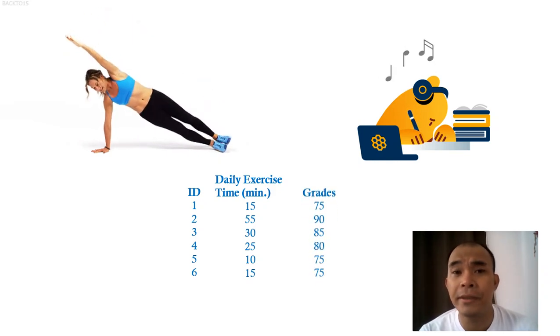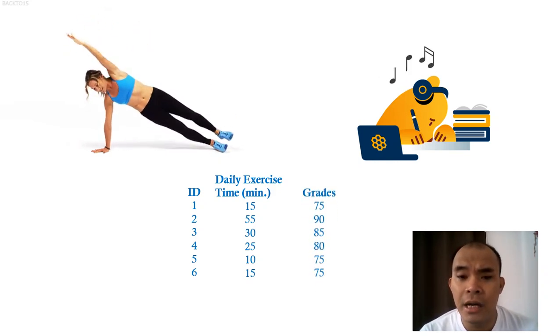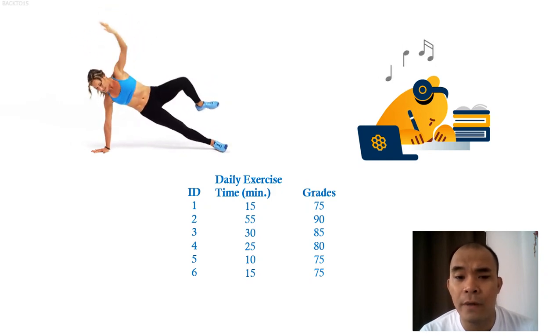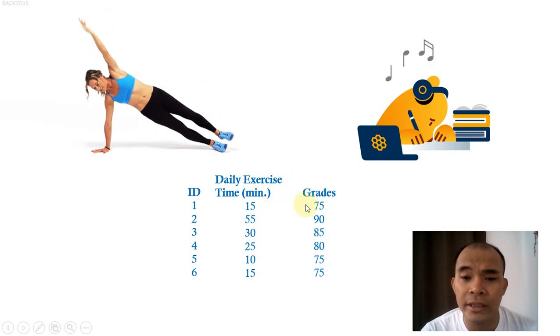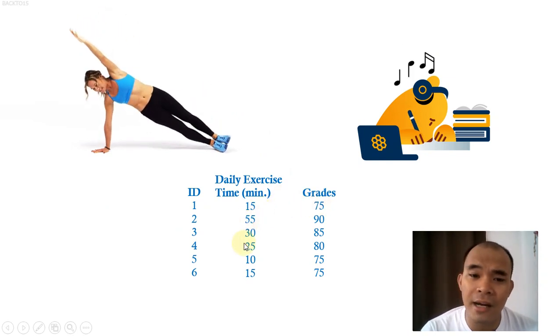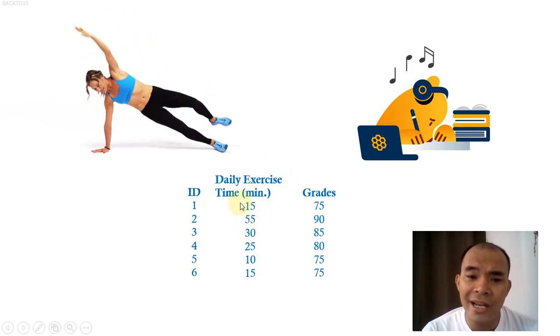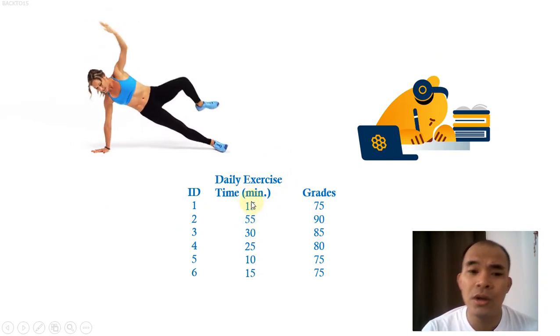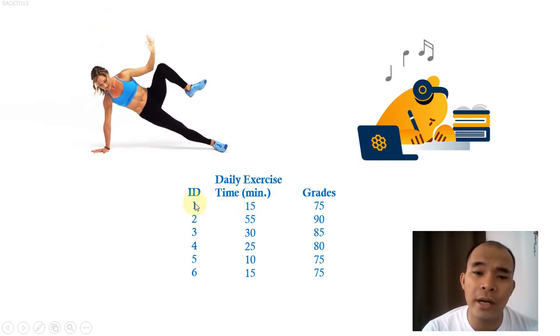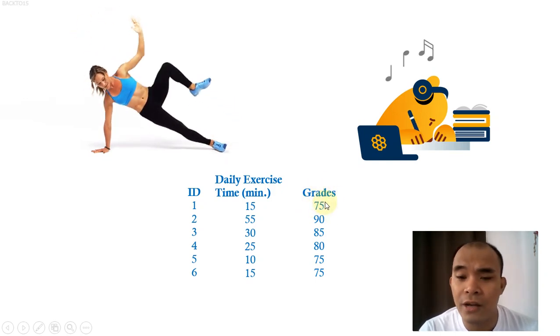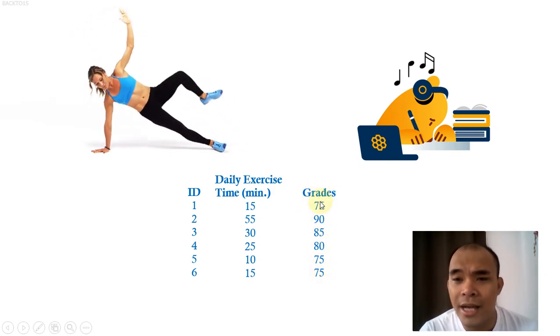And then the next question we asked them, what is their grades for the particular term or semester? For example, 75, 90, 75 for respondent one. So this one is very important that please do not rearrange this data from lowest to highest, because this daily exercise time corresponds to the response of ID number one or respondent number one, which is also the same as this 75% grade here. So do not rearrange the values here.